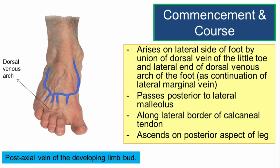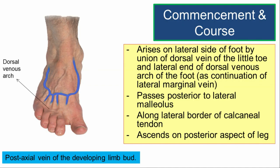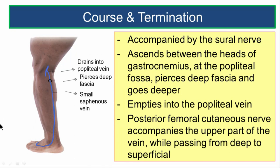The small saphenous vein passes posterior to the lateral malleolus, runs along the lateral border of the tendo calcaneus (Achilles tendon), and ascends on the posterior aspect of the leg. It is accompanied in the upper part of the leg by the sural nerve.